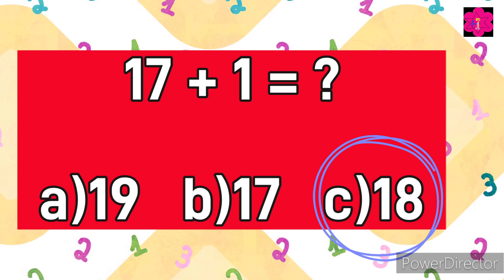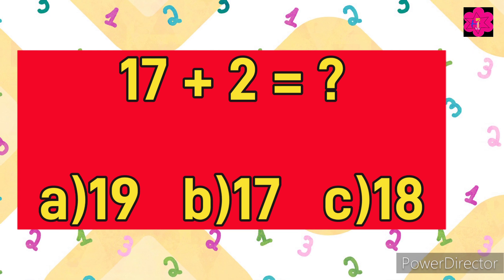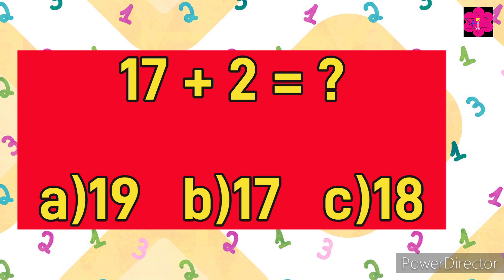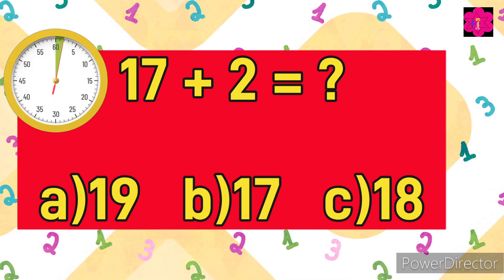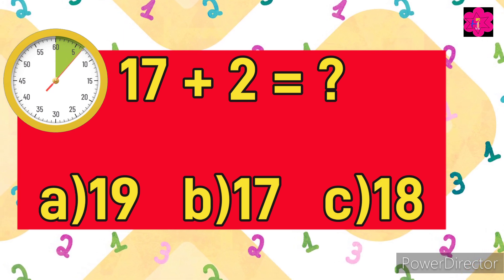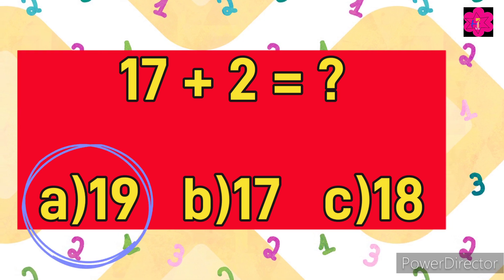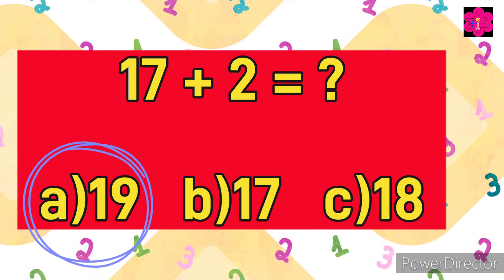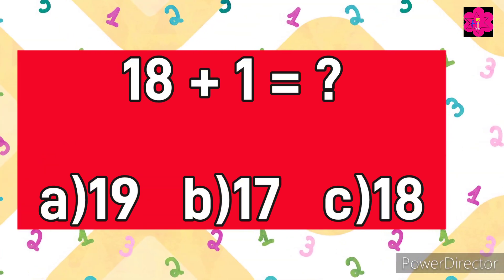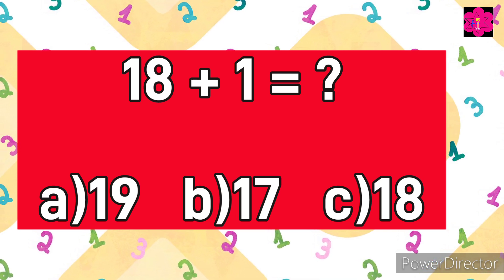Yes, correct answer is C) 18. Next sum: 17 plus 2 is equal to — and time starts now. Yes, correct answer is 19. Last but not the least: 18 plus 1 is equal to — A) 19, B) 17, or C) 18.